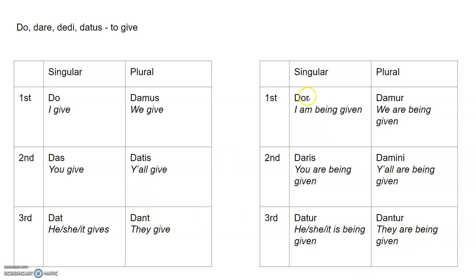That's basically it. These are a new set of endings to learn and be familiar with. You'll see one major feature is that they end with R — it's a good way to tell something is passive. If a verb ends with R, most likely it is passive and it means the subject is receiving whatever the action is. Instead of me doing the giving, if I say dor, I am the one who is being given. Dor barbaris a milite — I am being given to the barbarians by the soldier. So that is present active to present passive. In the next video, we'll talk about the future tense — future active and future passive. Valete.